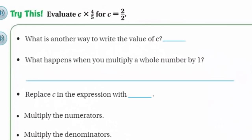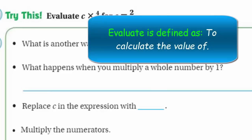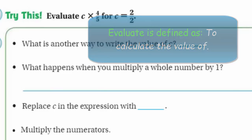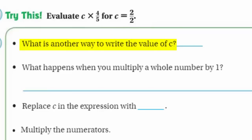Try this: evaluate C times 4 fifths, where C equals 2 over 2. Evaluate is asking us to solve — we're going to put in the value of C, which is 2 over 2, to solve this problem. So what is another way to write the value of C? C equals 2 over 2. Well, you guys are good at this by now — 2 over 2 is just 2 divided by 2, which is 1. Numero uno!